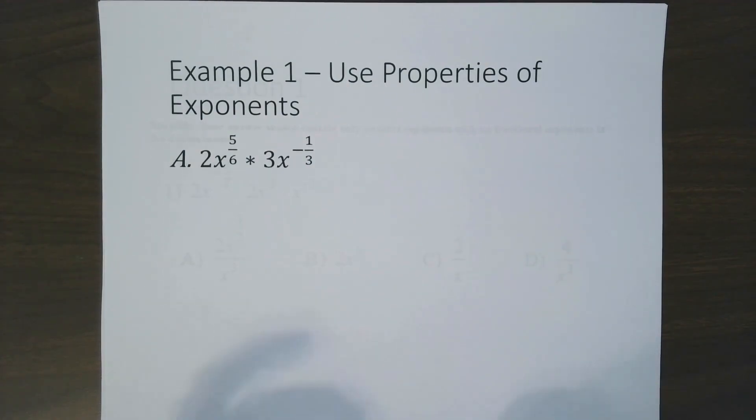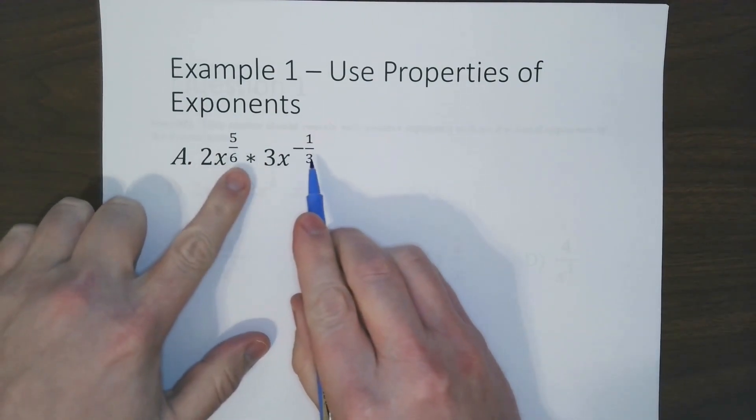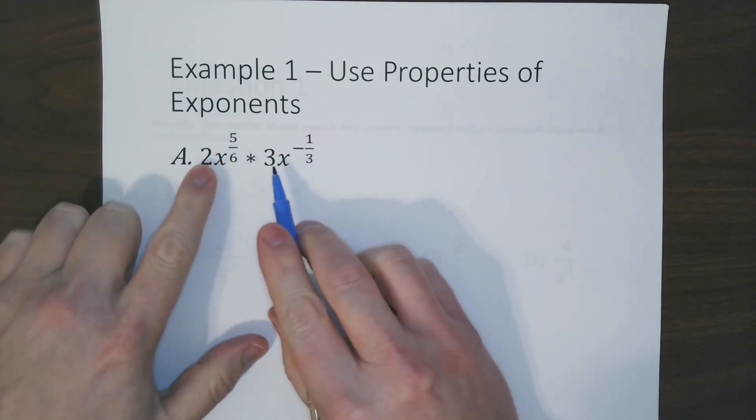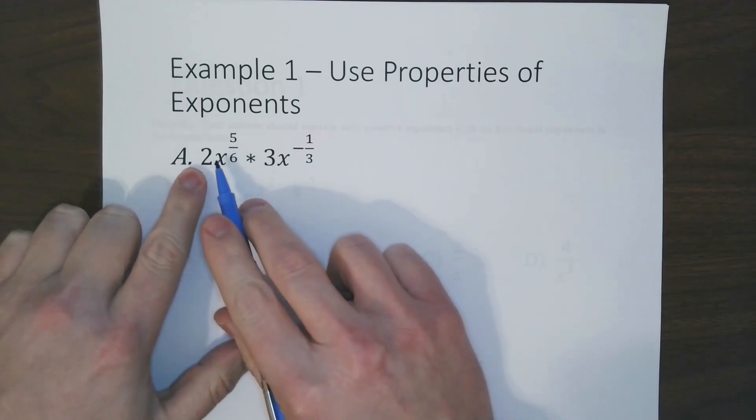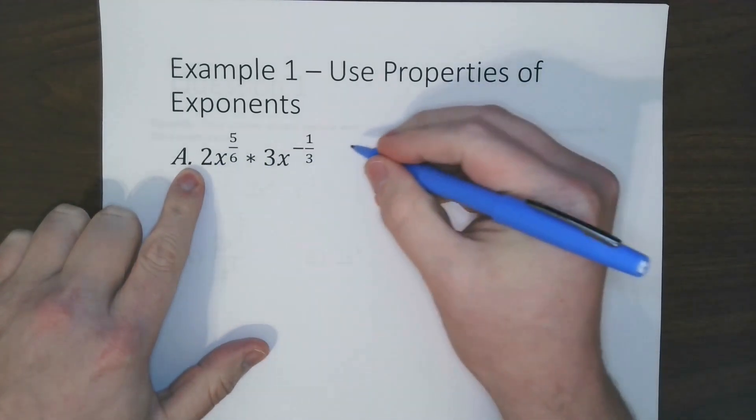For the first example, let's use some of these properties to rewrite this expression into a simplified form. So there are two levels to this. We have the coefficients, and we have the exponents. For the coefficients, we treat it as a normal problem, 2 times 3, which would be 6.